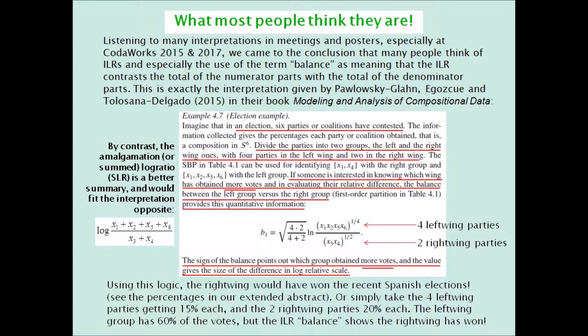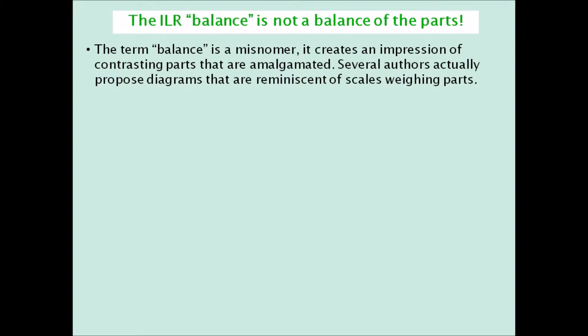They are interpreting the ILR as if it is the log ratio of two amalgamations, which we would call an amalgamation log ratio, or summated log ratio, abbreviated as SLR, where there are sums in the numerator and denominator — not geometric means. The so-called ILR balance is in fact not a balance of the parts, as several authors insinuate — even drawing diagrams reminiscent of scales weighing parts. In fact, the term 'balance' is a misnomer for the ILR, but correctly used when parts are amalgamated.